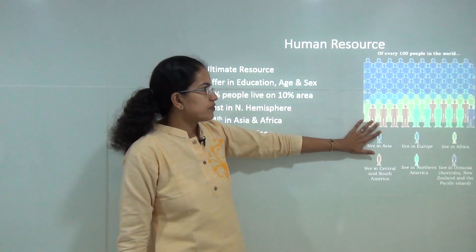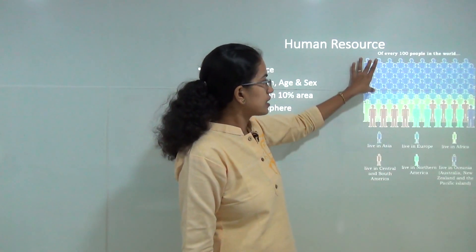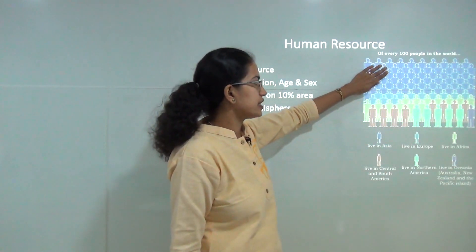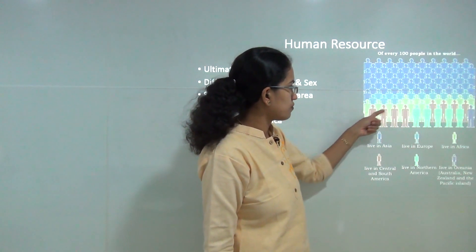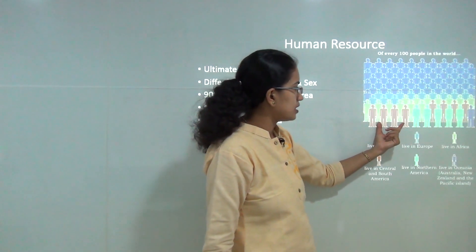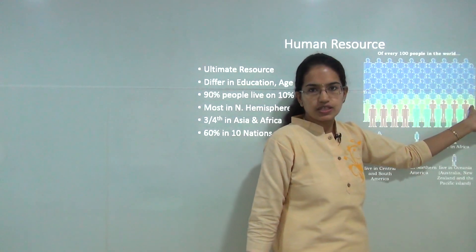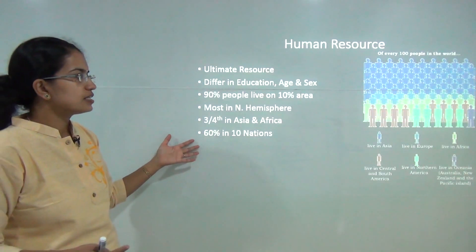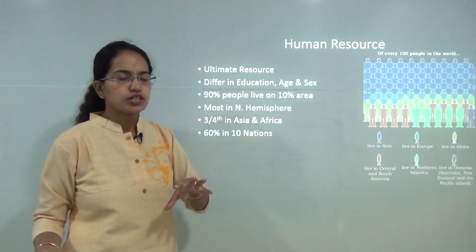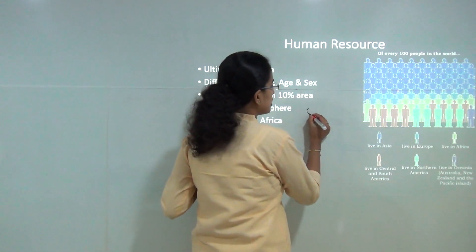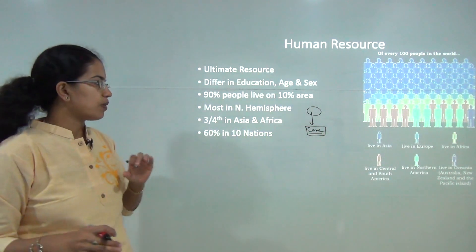Now, what is the key that we are trying to explain with this diagram? Of every hundred people that exist in the world, those marked in dark blue represent the ones that live in Asia, light blue represents Europe, then Africa, South and Central America, North America, and finally one out of the whole lot who lives in Australia. This shows us the various distribution, and we will talk about the ecumene and non-ecumene zones of population, which would help us understand where population is concentrated and why those are the major centers for population distribution.